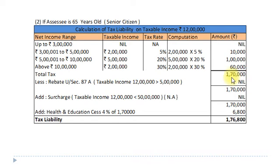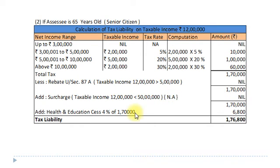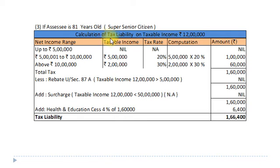Rebate under Section 87A is not allowed as taxable income of Rs. 12 lakh is greater than Rs. 5 lakh. Surcharge is also not applicable since taxable income is less than Rs. 50 lakh – nil. Health and Education Cess: 4% of Rs. 1,70,000 = Rs. 6,800. Final tax liability: Rs. 1,76,800 for the assessee of 65 years old (senior citizen).